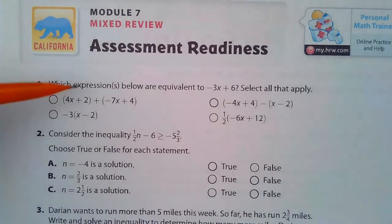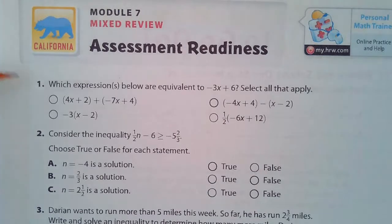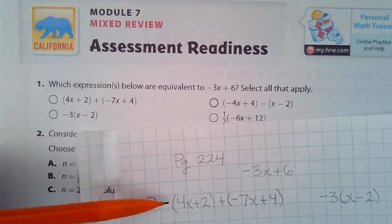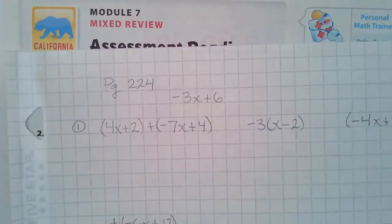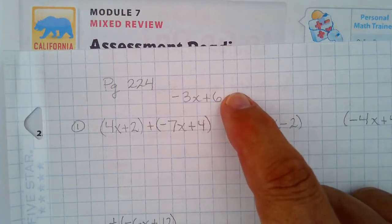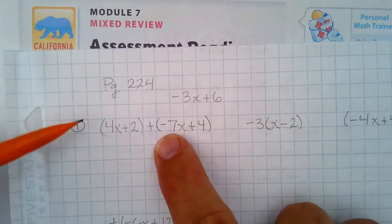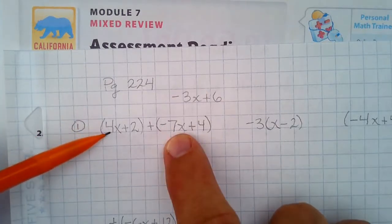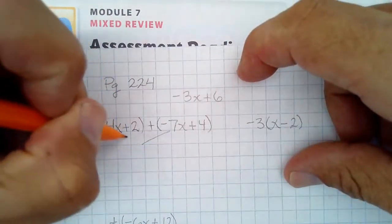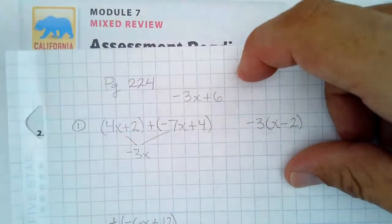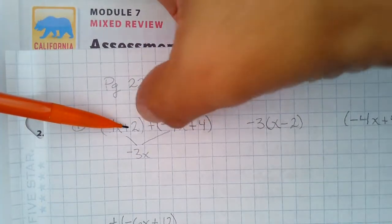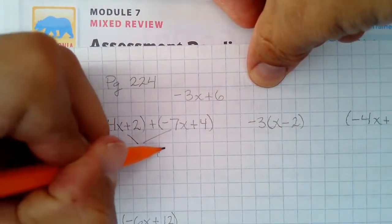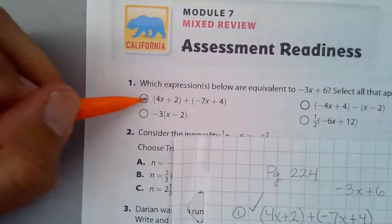First, we have: which expressions below are equivalent to negative 3x plus 6? Select all that apply. I wrote all of these down because there's really just not enough room on the paper to show all of this. I'll start with the first one. My target is getting negative 3x plus 6. I have to combine like terms — the variable terms: negative 4x plus negative 7. So negative 4 plus negative 7 is negative 3, giving negative 3x. Now 2 plus 4 is positive 6. That one's a go — I'm going to color in that one.